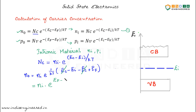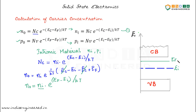If you know the carrier concentration in the intrinsic material, then for the doped material, all you need to know is how much the Fermi level has moved compared to the intrinsic material. In the case of N type material, the Fermi level will be near to the conduction band. In this equation, all we need to know is the intrinsic carrier concentration and how far the Fermi level moved from the intrinsic level.